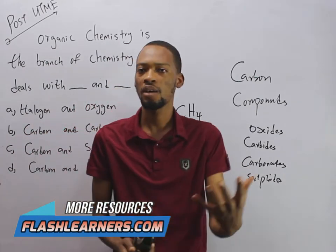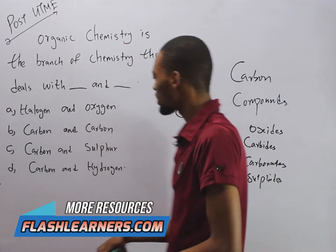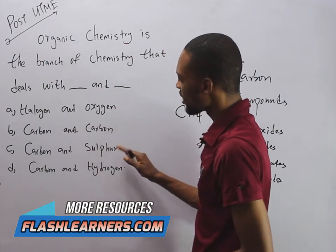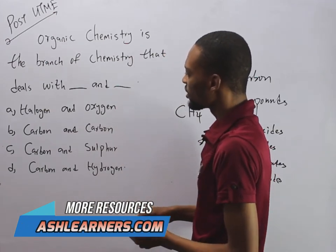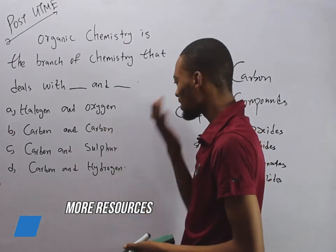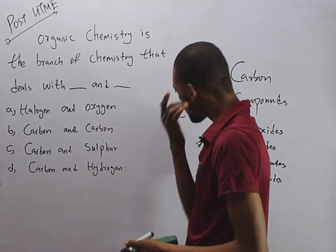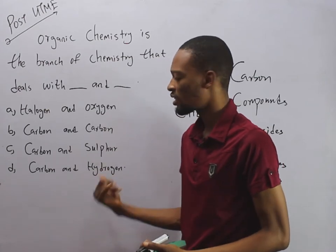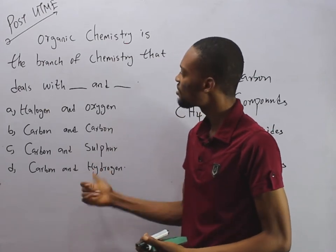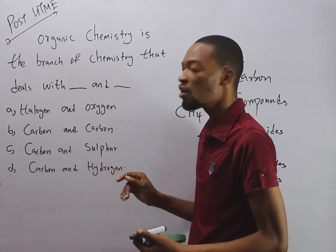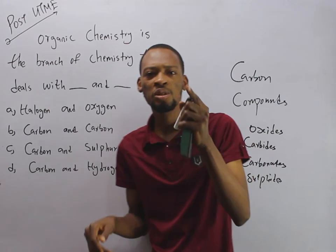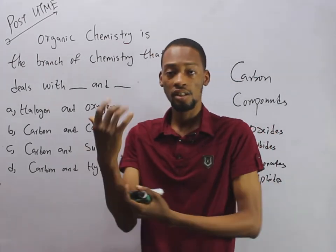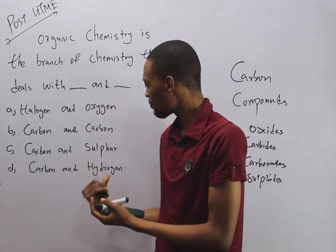From the options, A, B, and C are obviously out. The only meaningful option is D, which says organic chemistry is the study of carbon and hydrogen. However, it is not totally correct, because organic chemistry is not only the study of carbon and hydrogen.